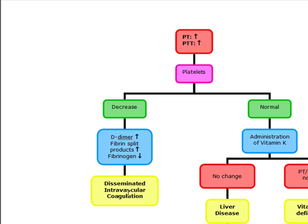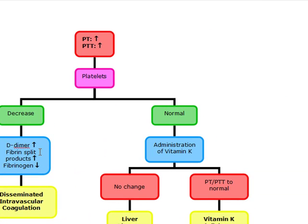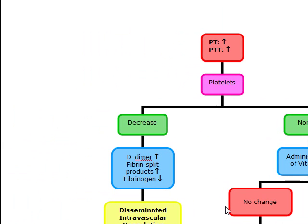In DIC, you can actually get bleeding from any orifice. When the patient has any of the above with an elevation of both PT and PTT and a decrease in the platelet count, think DIC. Remember that fibrinogen is going to be low because it's consumed. D-dimers and fibrin split products are going to be in increased amounts because all elements of the coagulation system will have been consumed. Sometimes you can also see signs of intravascular hemolysis with schistocytes.